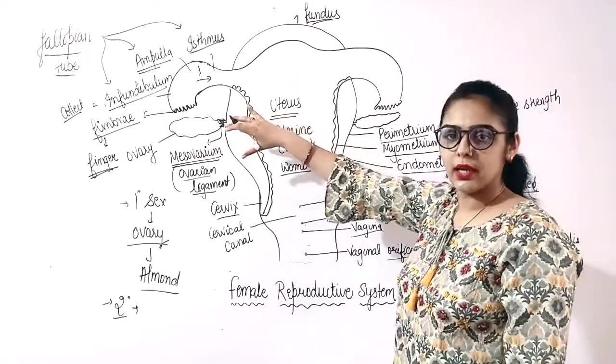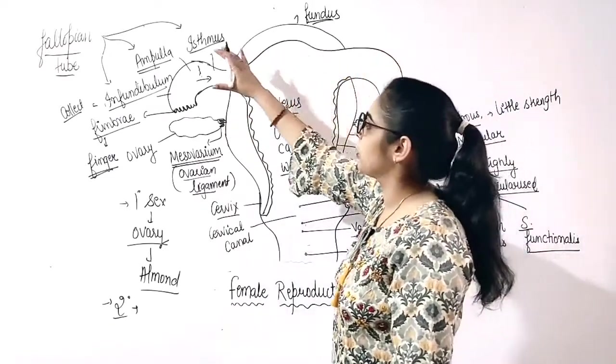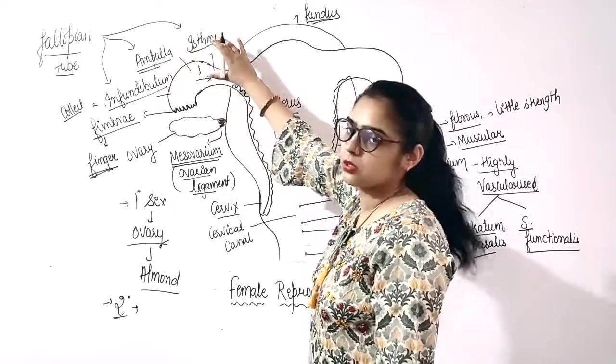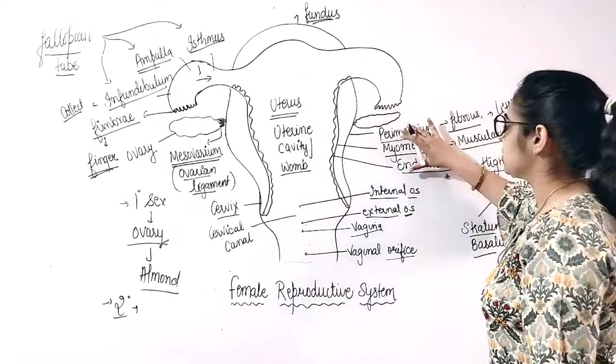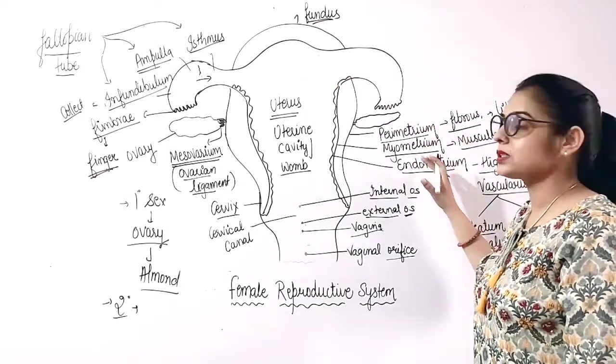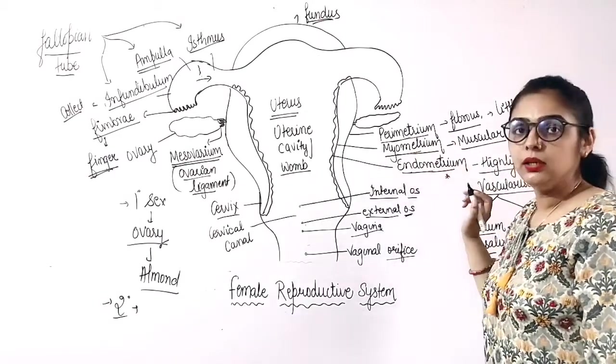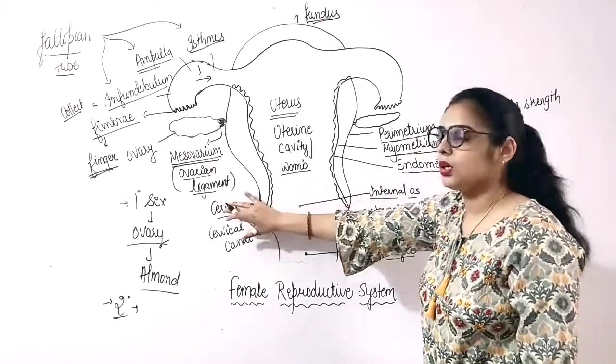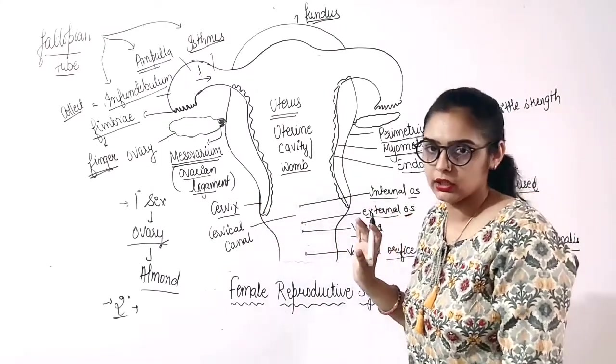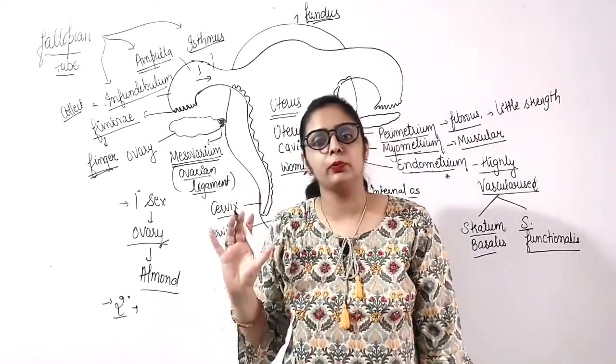What was there? Ovaries, primary sexual organ, then the secondary sexual organs, which include fallopian tube, which has three parts: infundibulum, ampulla, isthmus, then the uterus, three layers or three walls of the uterus, which combine to form uterine walls: perimetrium, myometrium, and the endometrium, cervix and vagina, which are also called birth canal. This is the structure of complete female reproductive system.